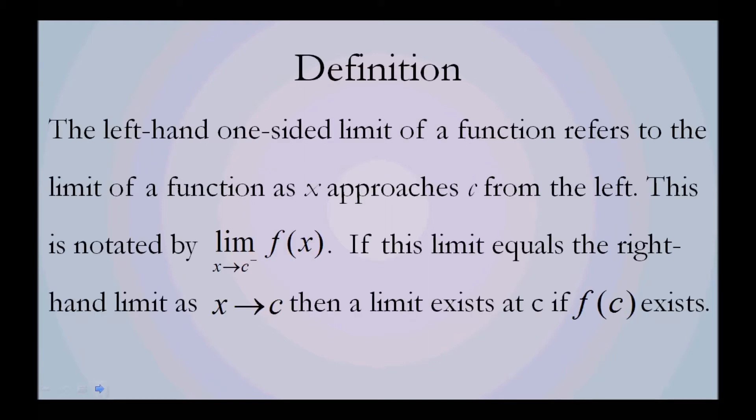Definition: The left-hand, or one-sided, limit of a function refers to the limit of a function as x approaches c from the left. This is notated by lim x→c⁻ f(x). If this limit equals the right-hand limit as x approaches c, then a limit exists at c if f(c) exists.